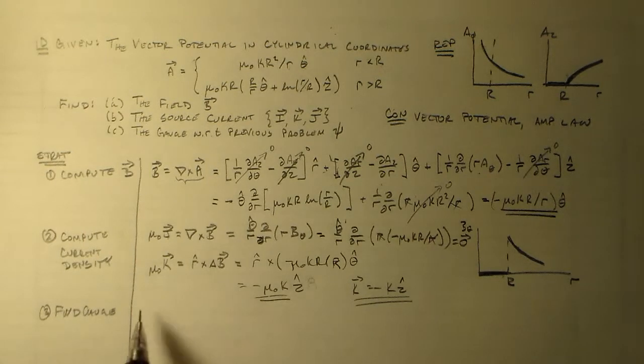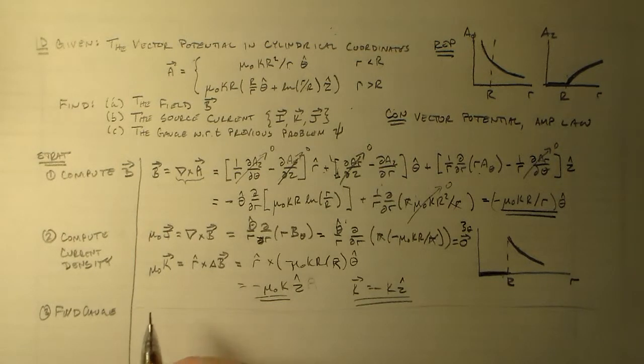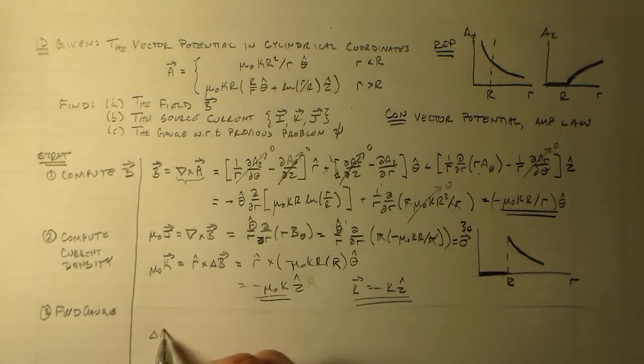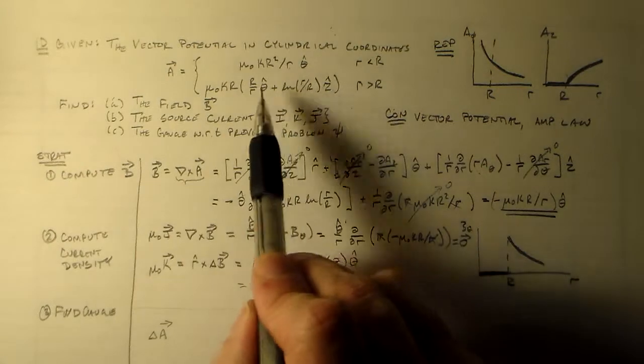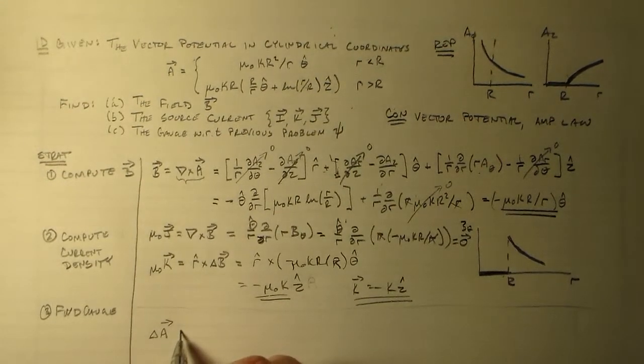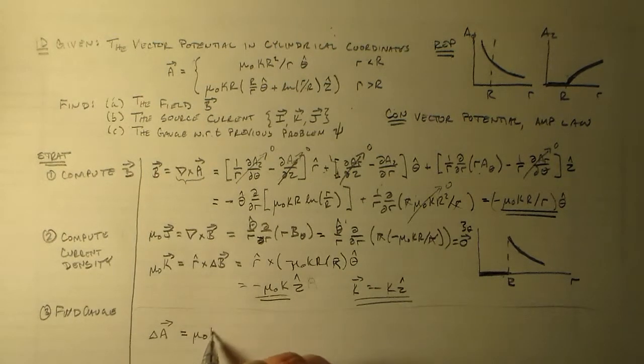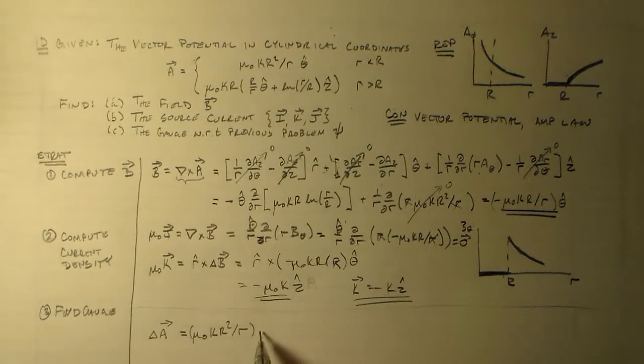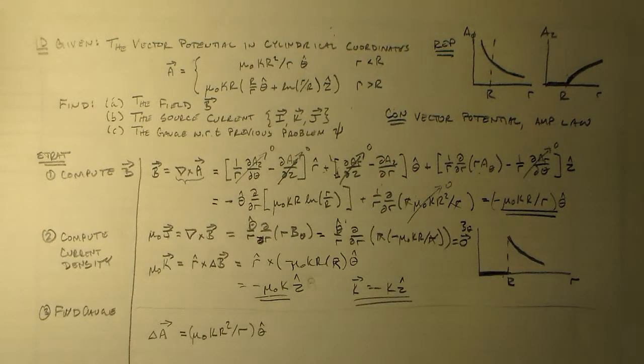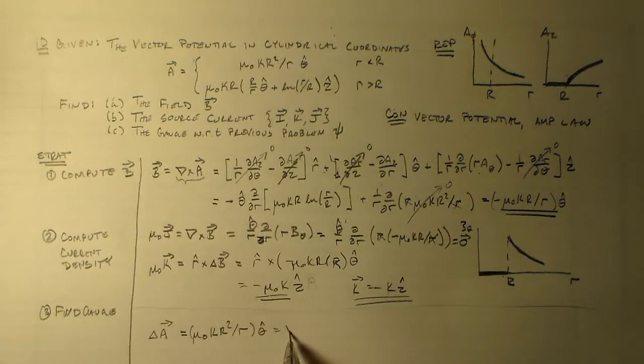So the last part we have to do is find this gauge. The gauge we'll find by looking at the difference between the two gauges. And that difference is just this theta component, basically. So that's equal to mu naught k R squared over r in the theta hat direction.